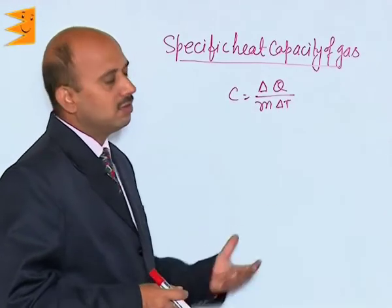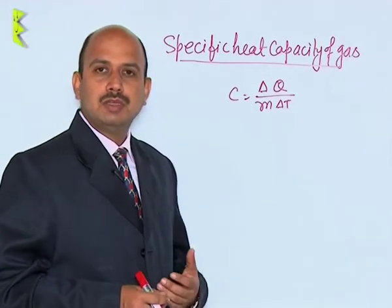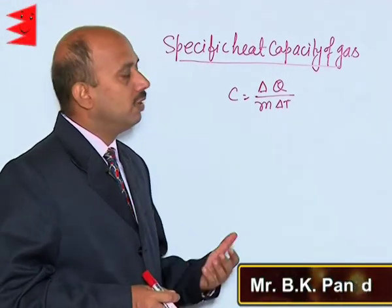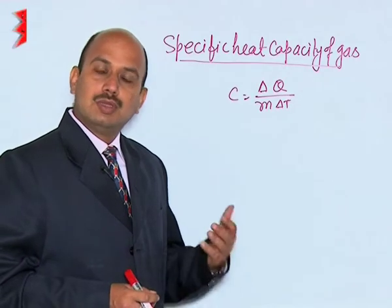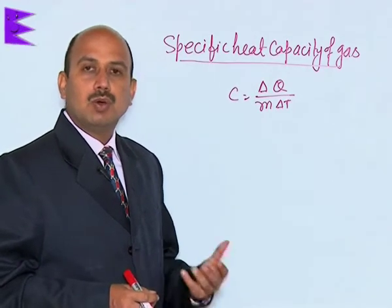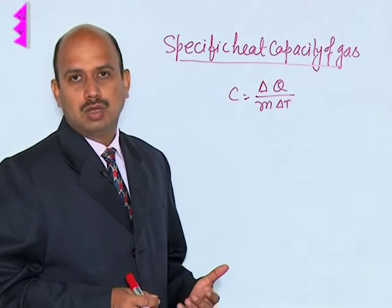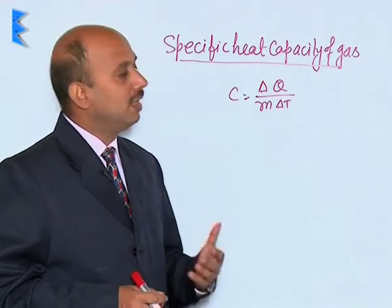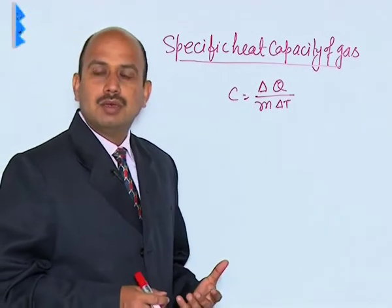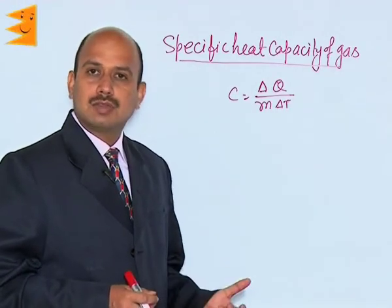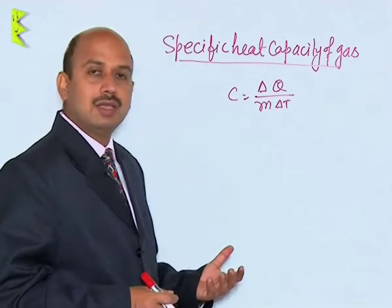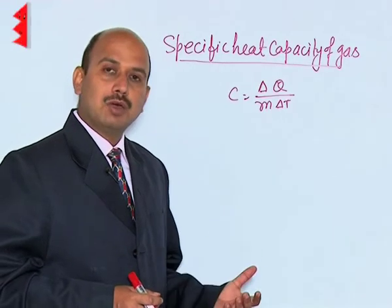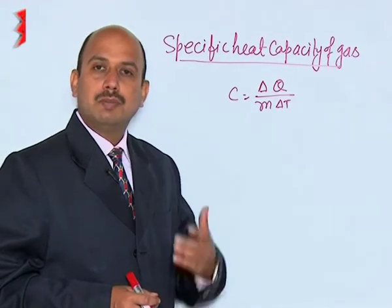Now, let's see the specific heat of gases. We have already done specific heat of solids and liquids. When heat is given to solids and liquids, there is a rise in temperature because their coefficient of expansion is very small, meaning there is not much change in volume. But in the case of gases, when heat is supplied, it is divided in two ways: one part is used to raise the temperature of the gas, and another part is used to do work against the pressure.